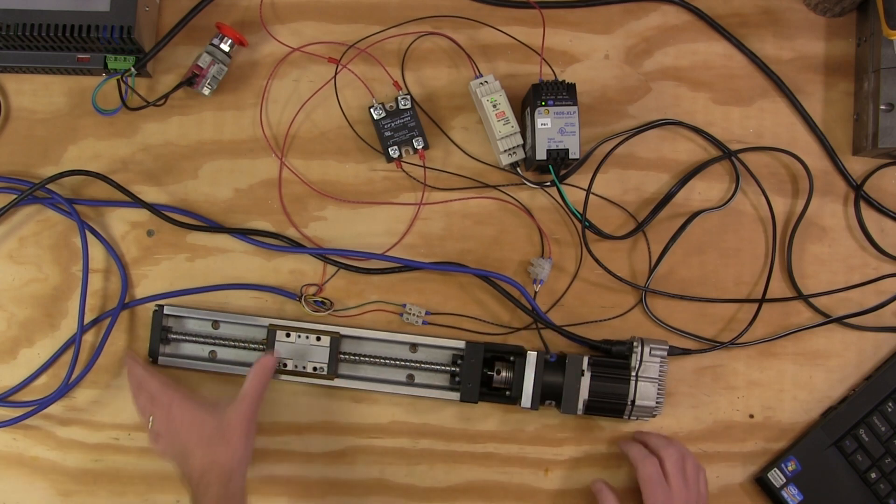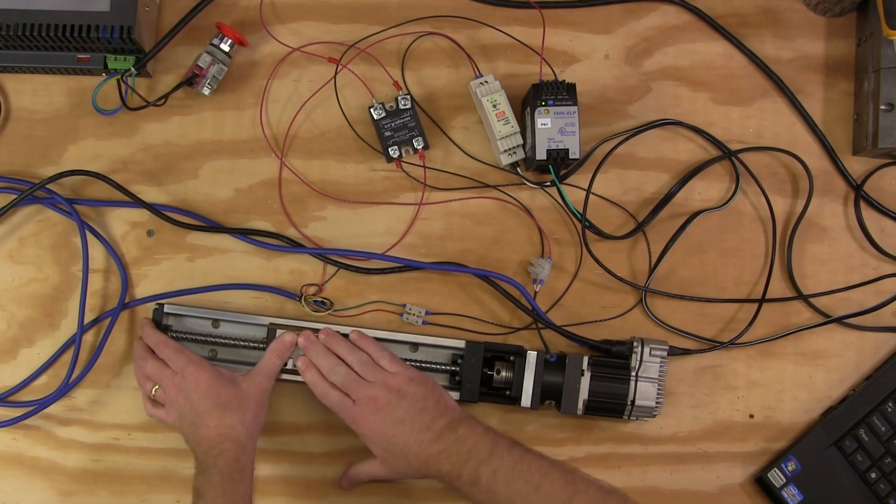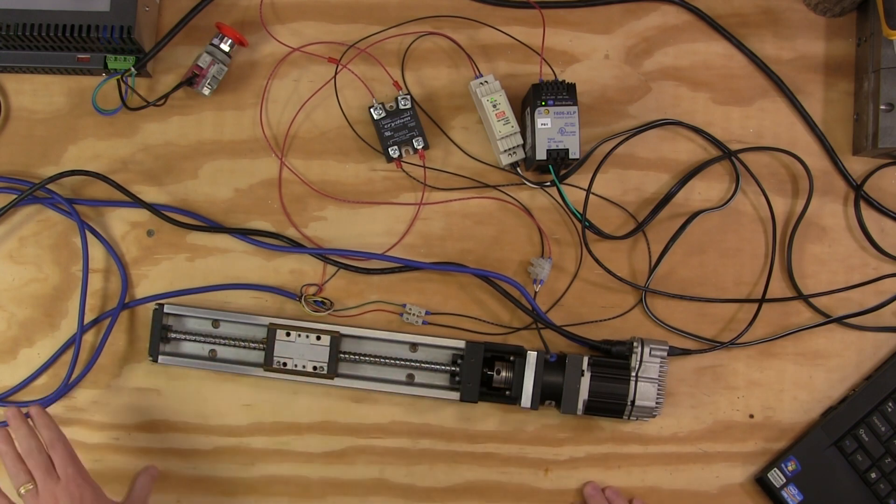So it's locked. Any weight that we would have on here would not have enough pull on it to actually pull the Z-axis down. So that's it.